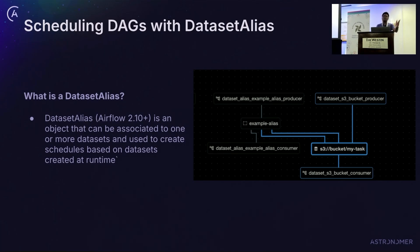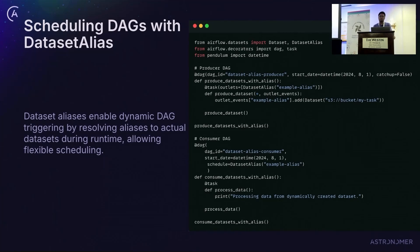A new concept introduced in Airflow 2.10 is dataset alias. A dataset alias is an object that can be associated with multiple datasets and can be used to schedule DAGs on datasets that are created at runtime. In the producer DAG you can define a dataset alias with a unique URI and associate different datasets with that alias. In the consumer DAG you set the schedule as a dataset alias of that name, and whenever any dataset in that alias is updated, it triggers the consumer DAG.